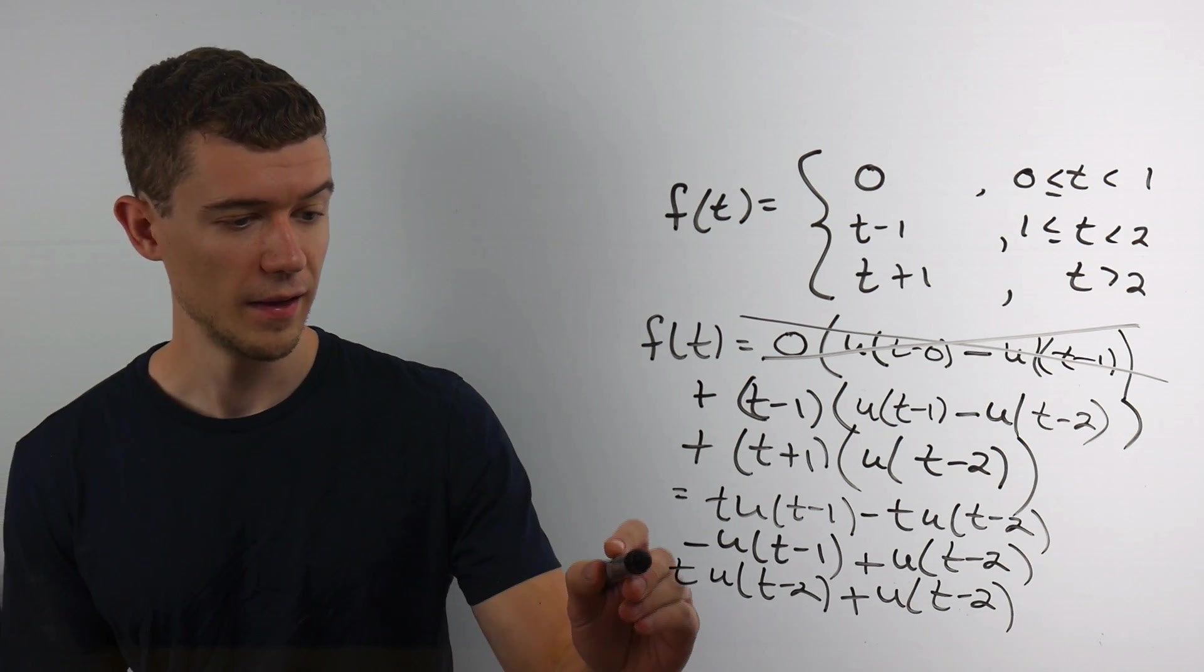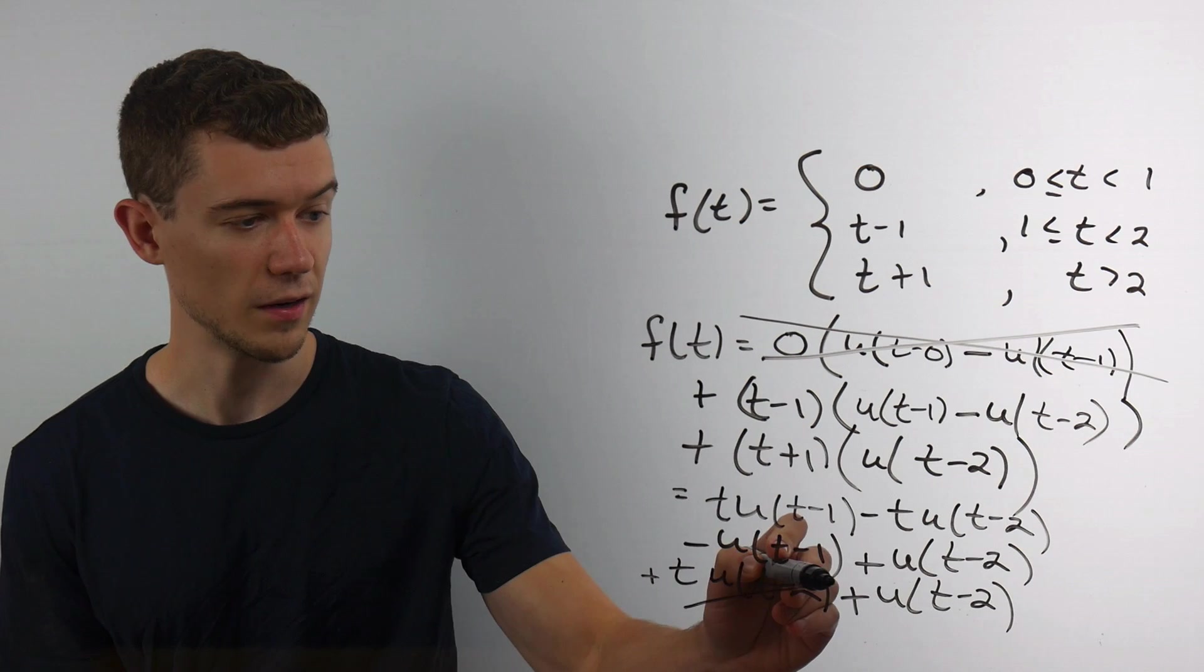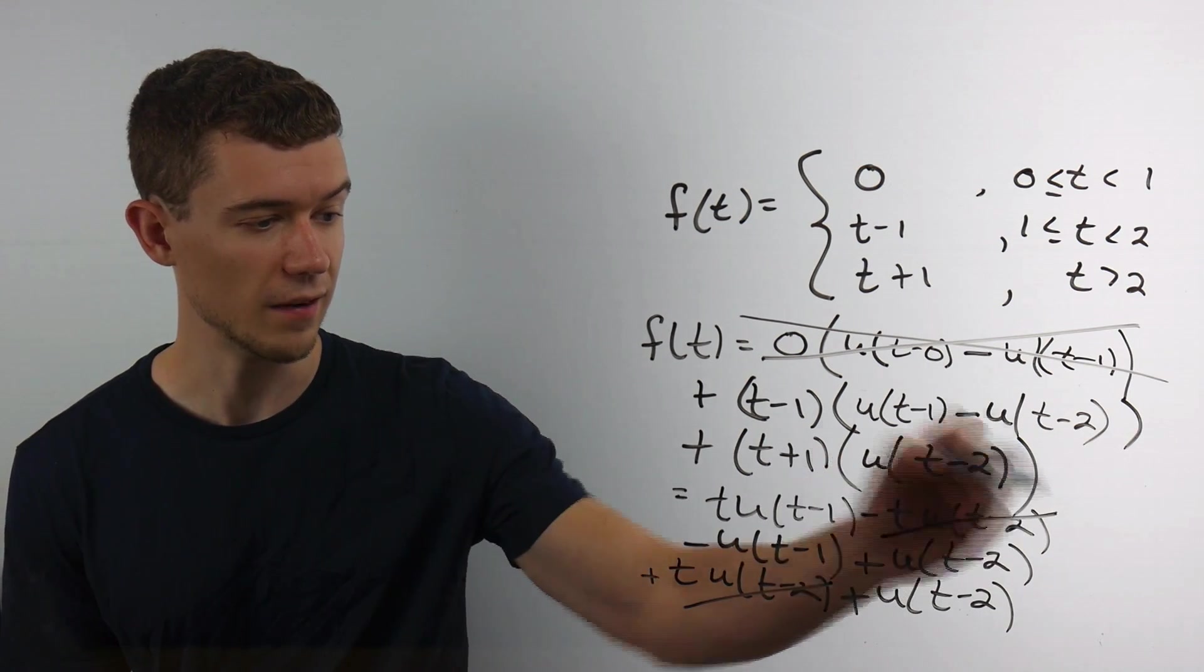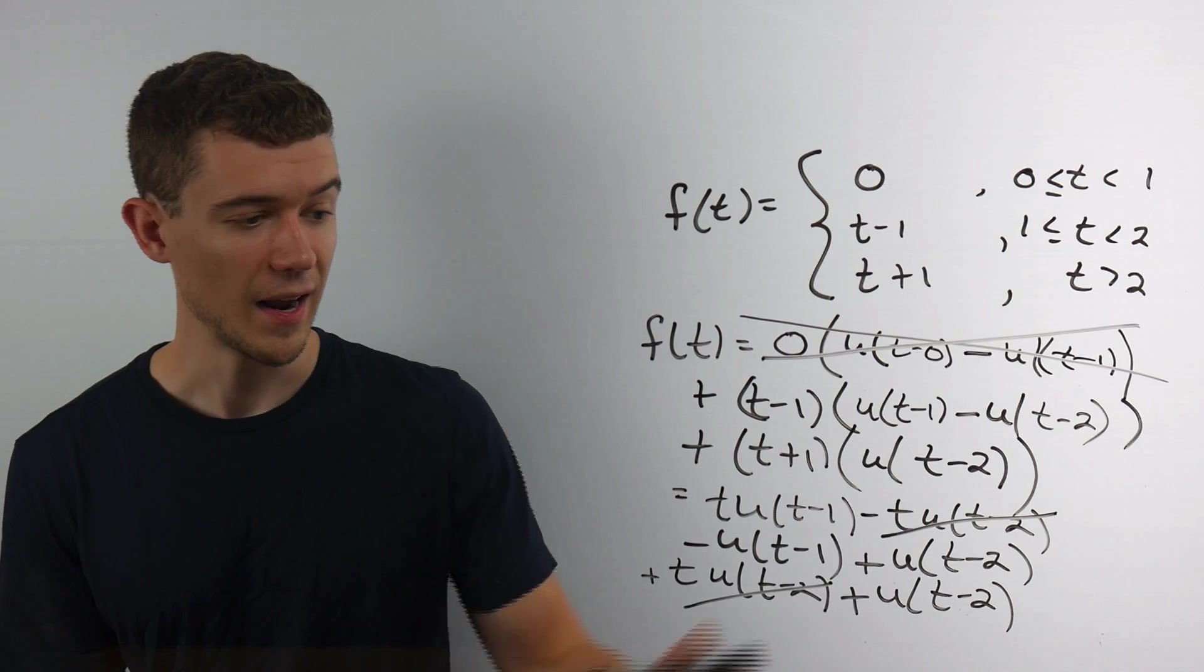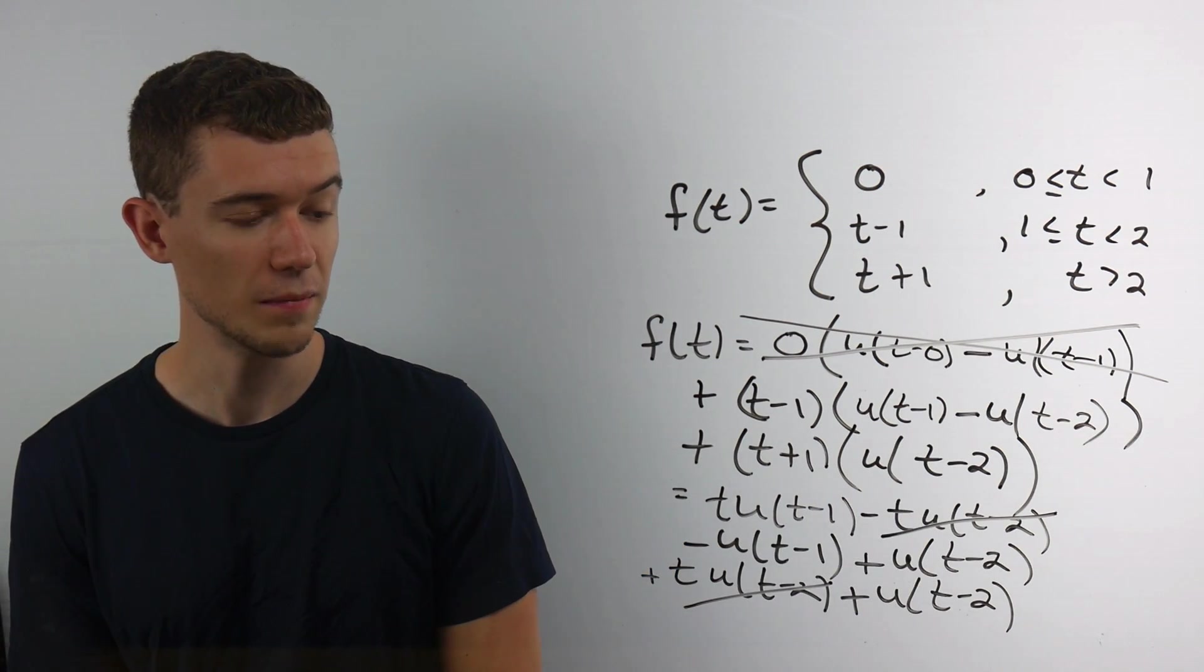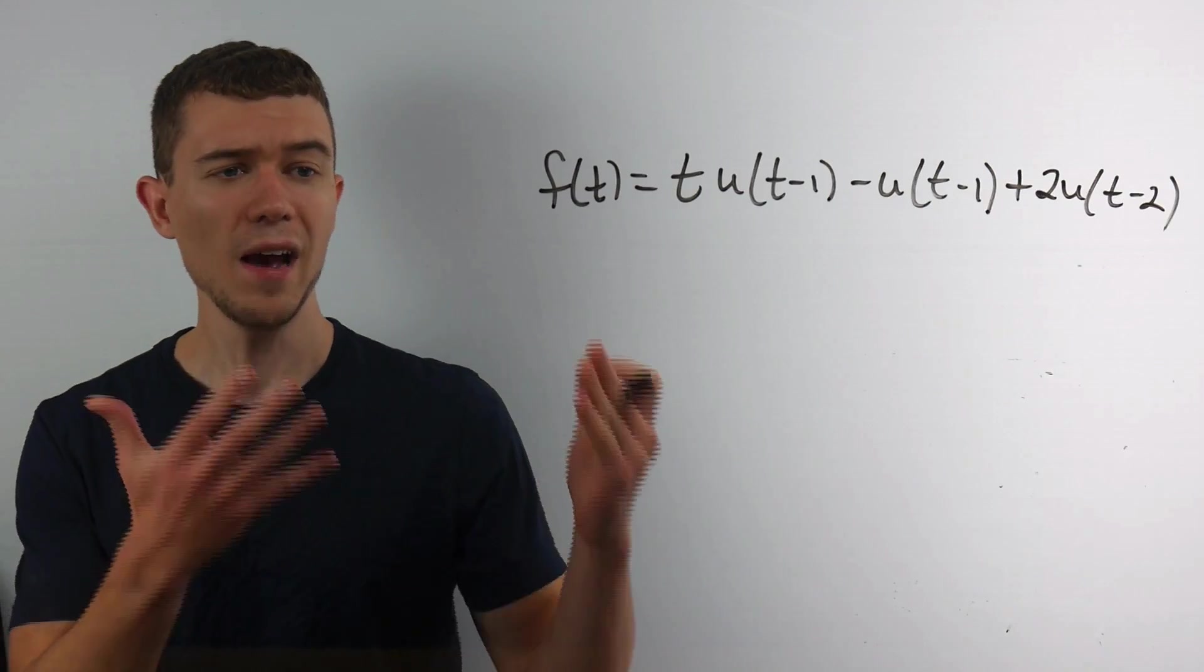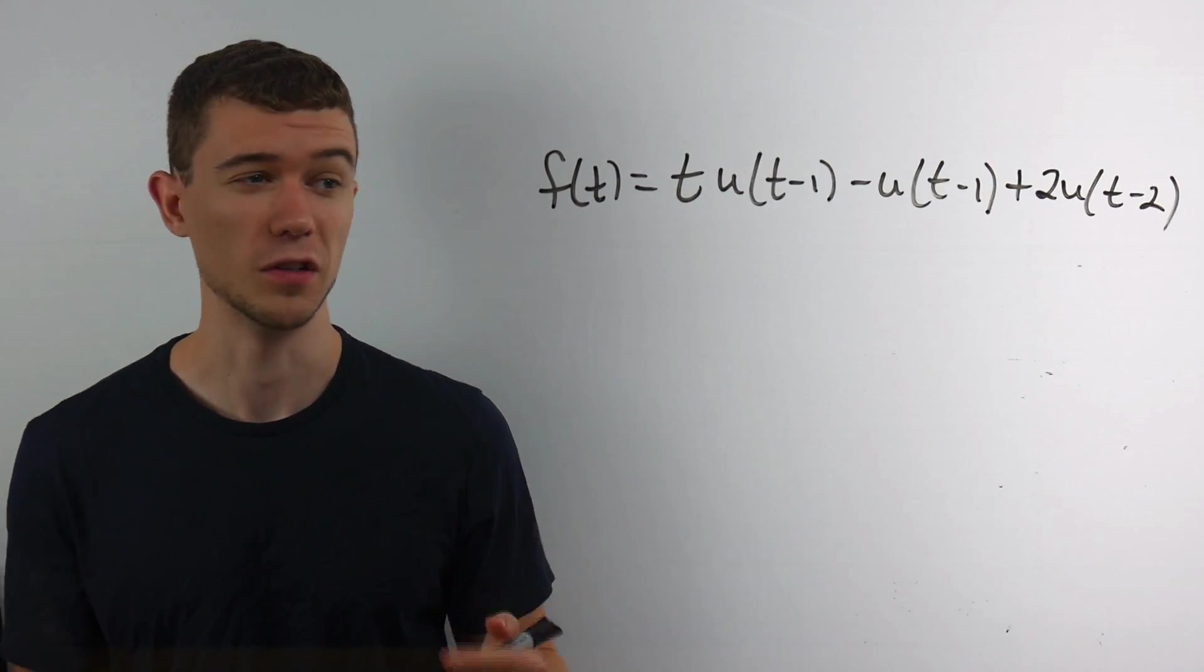Well, if you look at this, I have a plus t of u of t minus 2 and a minus t of u of t minus 2. Those are going to cancel each other out. And then I'm also having plus 2 of these, plus 2 u of t minus 2s. So we can rewrite this. And we have our simplified function in terms of unit step functions.